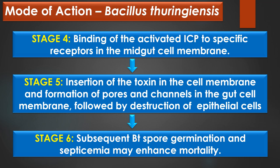After binding to the receptor, the toxin inserts irreversibly into the plasma membrane of the cell. The formation of the toxin induces pores in the columnar cells of the apical membrane and allows rapid fluxes of ions. The disruption of gut integrity leads to the death of the insect through starvation or septicemia. Finally, in stage 6, subsequent Bacillus thuringiensis spore germination and septicemia may enhance the mortality of the insect pest.